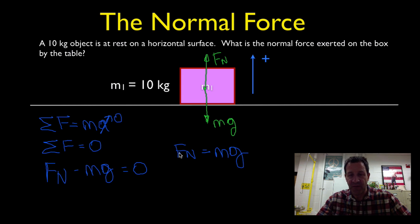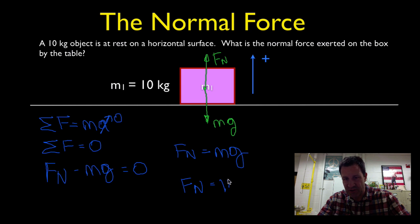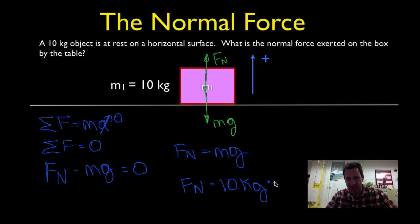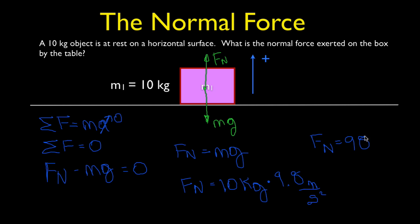This tells us that the normal force is equal to the weight of the object. We have only those two forces — weight and normal force — which are opposite and equal since the object is not accelerating in the vertical direction. Therefore, FN equals mg equals 10 kilograms times 9.8 meters per second squared, which gives us a normal force equal to 98 Newtons.